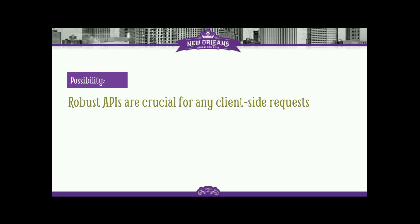Another thing Dries mentioned during his keynote is that we really need to make Drupal a first-class API for CMS, which means really robust APIs are very crucial — our REST APIs, the Relaxed Web Services module, GraphQL even. All of these are very important to making sure that Drupal is a very robust backend. Whatever path we take moving forward, I think we need to enable decoupled applications to be able to consume Drupal data in a very easy way.